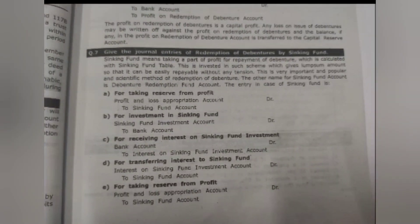Journal entries for redemption of debenture by sinking fund: When taking reserve from profit — Profit and Loss Appropriation Account Dr. to Sinking Fund Account. When investing — Sinking Fund Investment Account Dr. to Bank Account. When receiving interest from sinking fund investment — Bank Account Dr. to Interest on Sinking Fund Investment Account. For transferring interest — Interest on Sinking Fund Dr. to Sinking Fund Account. Taking reserve from profit — Profit and Loss Appropriation Account Dr. to Sinking Fund Account.